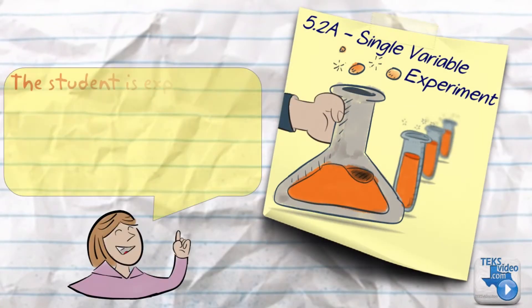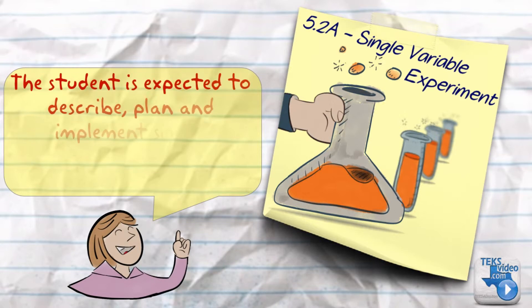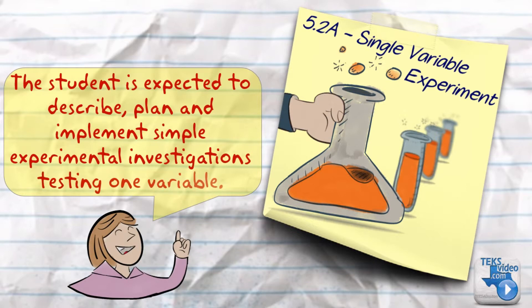In 5.2a, the student is expected to describe, plan, and implement simple experimental investigations testing one variable.